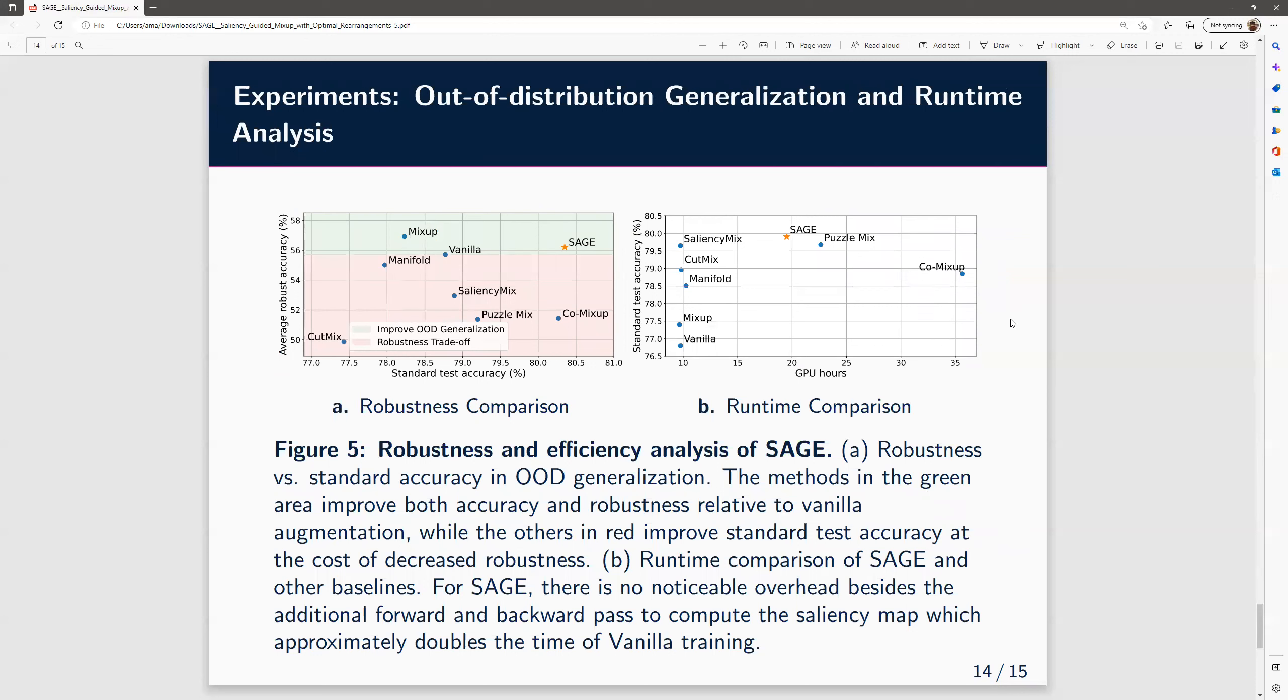Lastly, we demonstrate SAGE in the out-of-distribution generalization setting. The figure on the left is the robustness versus standard accuracy. Methods in green, that is mix-up and SAGE, improve both accuracy and robustness relative to the vanilla method. While other approaches improve standard accuracy but at the cost of decreased robustness. On the right, this is a runtime comparison of SAGE and other baselines. For SAGE, there is no noticeable overhead besides the additional forward and backward passes to compute the saliency map.